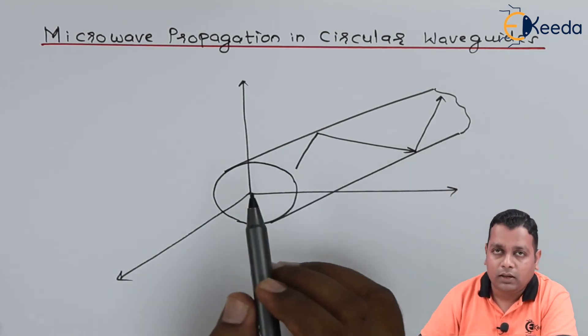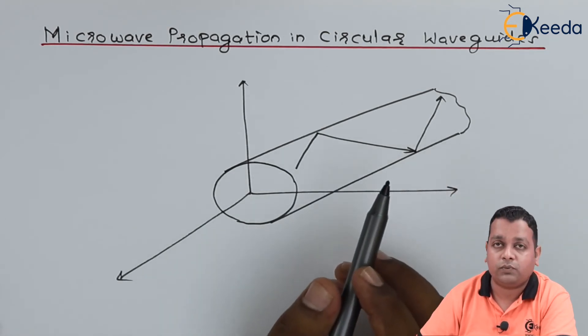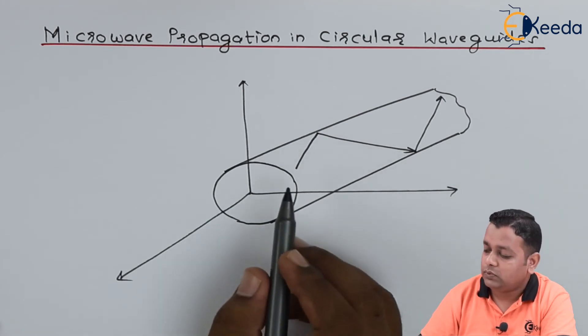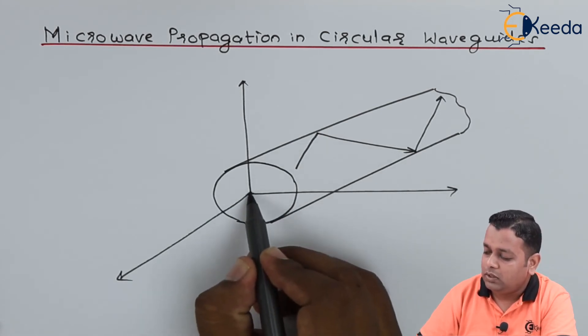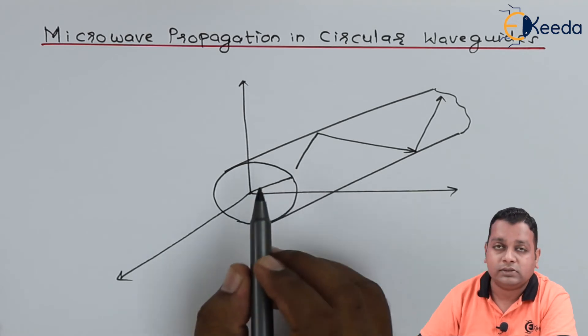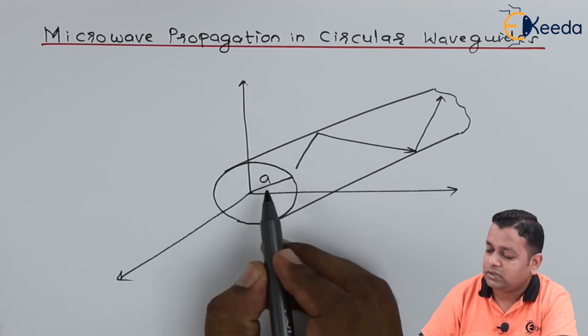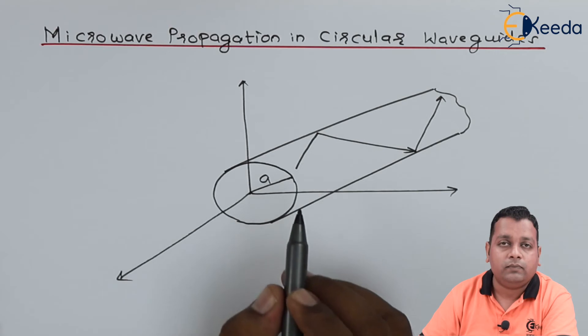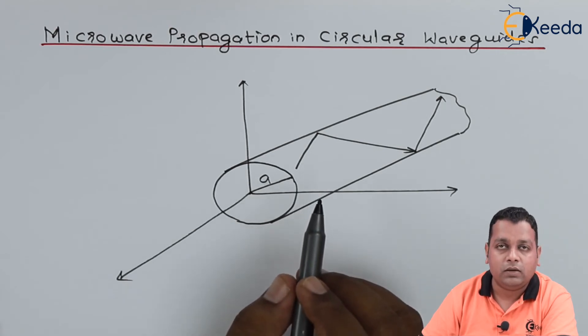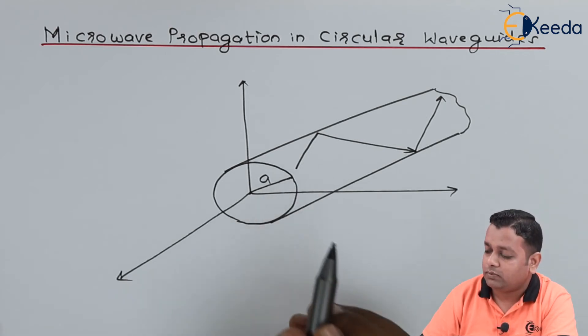So for the further analysis into the subsequent topics, the dimensions we consider to be only one dimension for the circular cross section, that is the radius, and we consider small a to be the variable to represent the radius of circular waveguide.